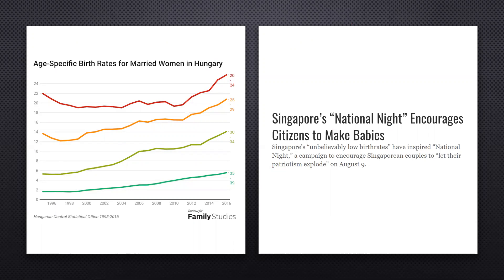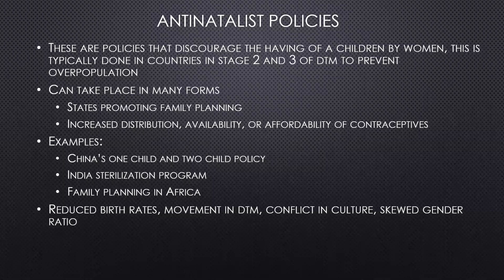Singapore is another example. They held a 'National Night' to encourage citizens to 'make babies.' Today, Singapore encourages marriage, provides baby bonuses — cash for new mothers — financial benefits for female graduates with more than three children, and paternity leave for fathers. However, whether this is working is debatable: Singapore's TFR is around 1.1, well below the replacement rate of 2.1.